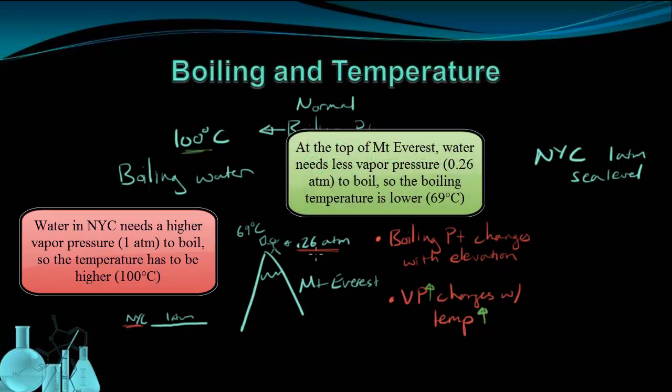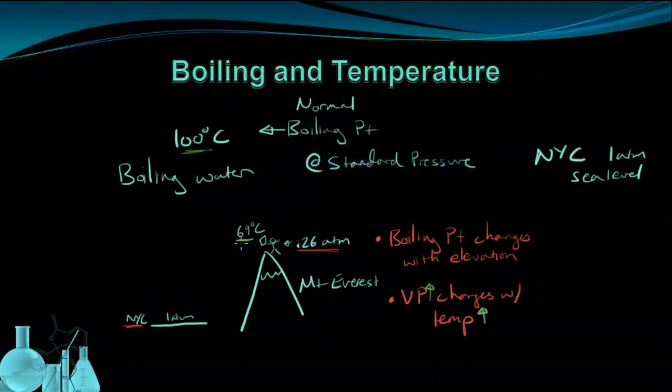But at the top of Mount Everest, we need less vapor pressure. So we also need less temperature. So we end up with a boiling point of 69 degrees. So the relationship between the boiling point temperature and the elevation has to do with vapor pressure and how vapor pressure changes with temperature.